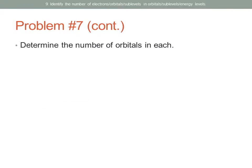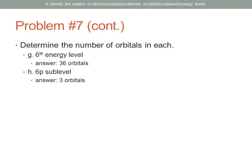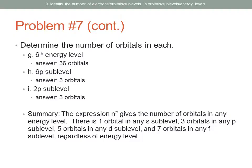The sixth energy level: 6 squared is 36, so 36 orbitals. The 6P sublevel: all P sublevels regardless of energy level contain three orbitals. The 2P sublevel also has three orbitals. To summarize: N squared gives the number of orbitals in any energy level. There is one orbital in any S sublevel, three in any P sublevel, five in any D sublevel, and seven in any F sublevel, regardless of the energy level.